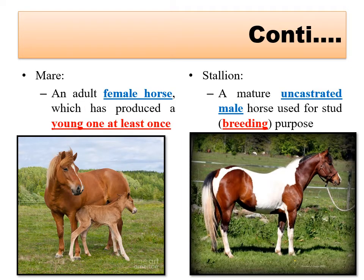Adult male and female in horse are called stallion and mare respectively. A mare is an adult female horse which has produced a young one at least once. A stallion is an uncastrated male horse used for breeding purposes.